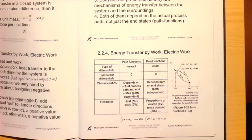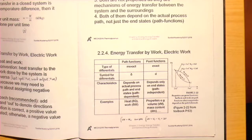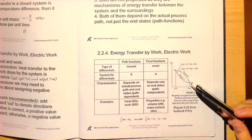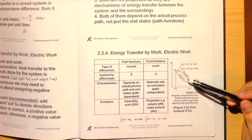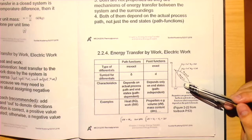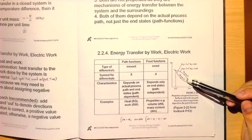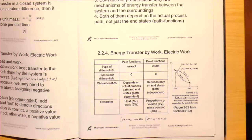The reason we distinguish inexact from exact is that a path function depends not only on the end state but also on the actual path taken, whereas a point function depends on the end state only. For example, if you have two end states — points one and two — and you change the path from process A to process B, the integral of the path function would be different, but for a point function it remains the same.